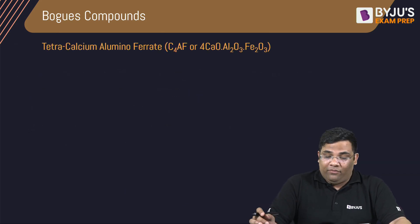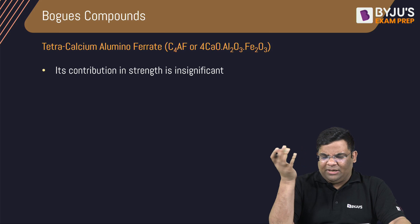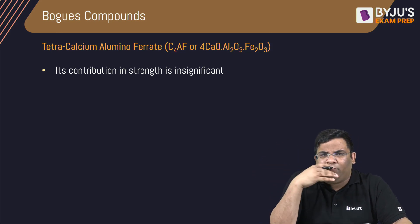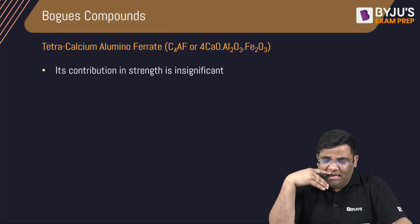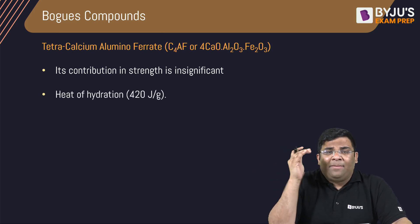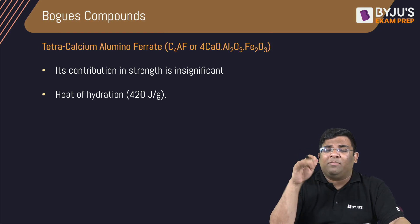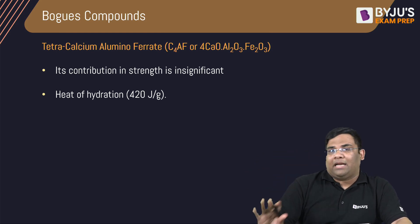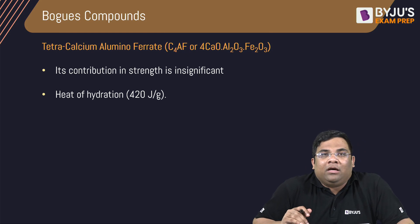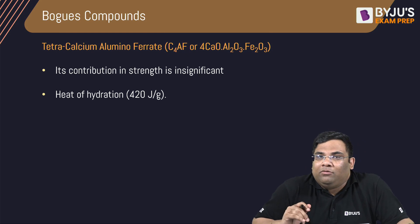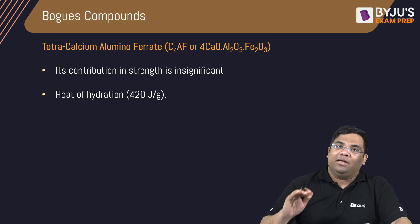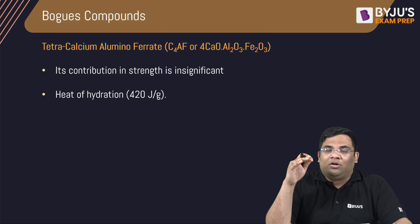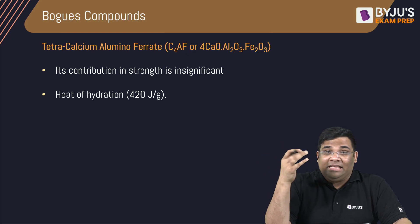The last Bogue compound is C4AF (Tetracalcium Alumino Ferrite). It has very less contribution to strength. However, it has a moderate heat of hydration — around 420 joules per gram. So we have now seen all four Bogue compounds, their properties, percentages, and names.